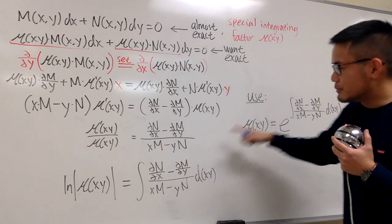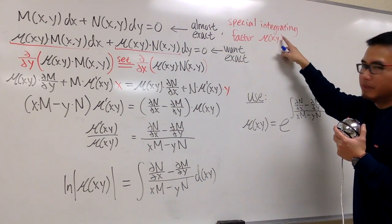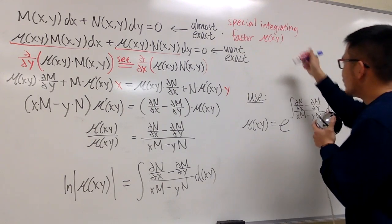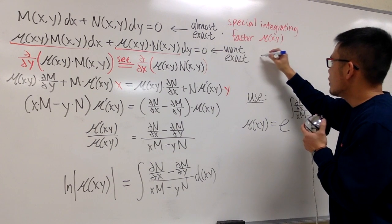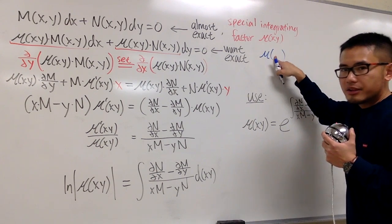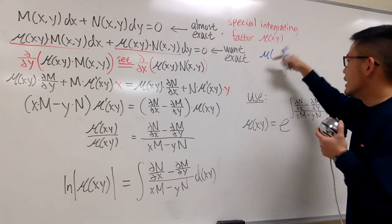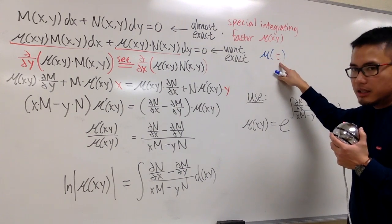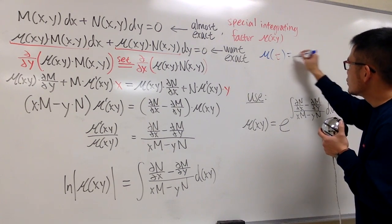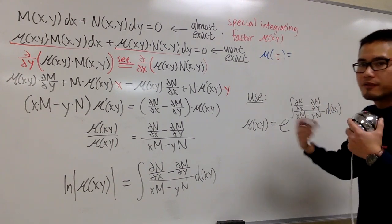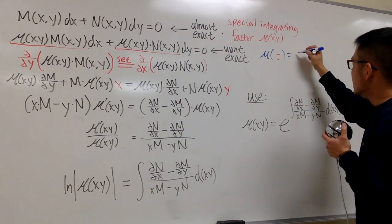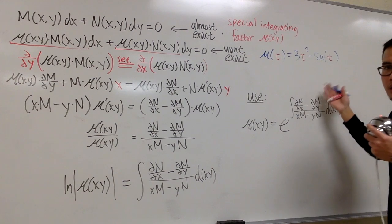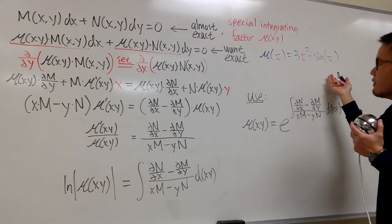Before I talk about the steps, let me emphasize what mu of x times y means. Going back to function notation, let me give an example: mu of t, where t is the independent variable, is a function of t. I can write an expression in terms of t, such as 3t squared minus sine of t — that would be a function in terms of t.